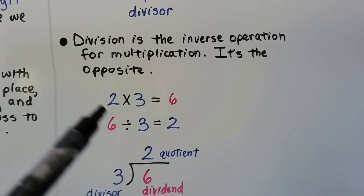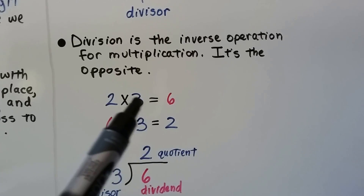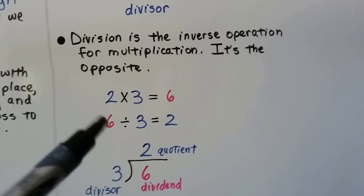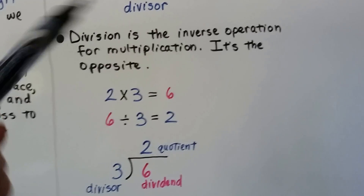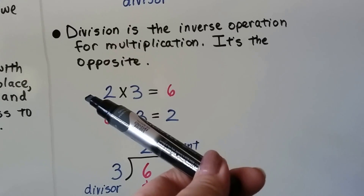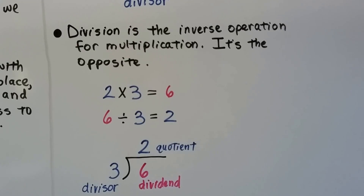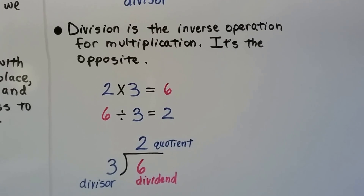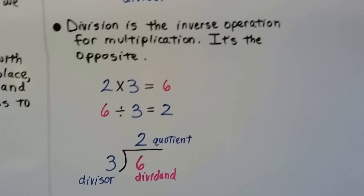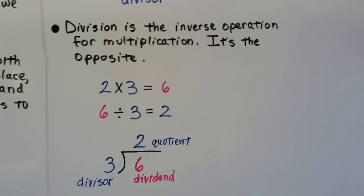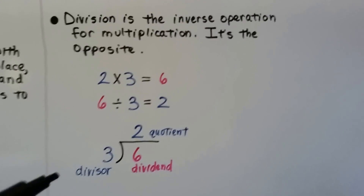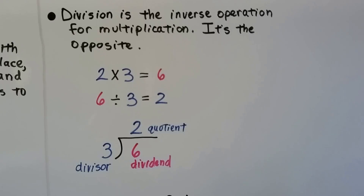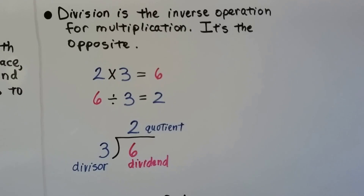Two times three equals six, and I can flip it — six divided by three equals two. We went this way: two times three equals six, and now we're going this way: six divided by three equals two. To undo multiplication you can use division, and to undo division you can use multiplication. You can use them to check answers — check a division quotient by doing multiplication and check multiplication by doing division, just like addition and subtraction are inverse operations.